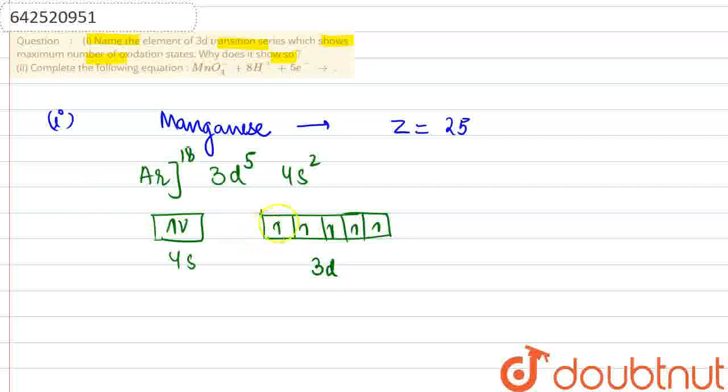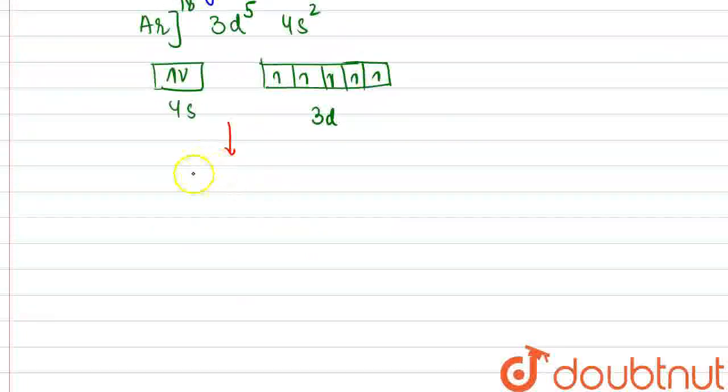So, as we can see here already, that this is having so many unpaired electrons. And how many unpaired electrons are there? 5. 5 unpaired electrons maximum and further, if there is any high energy orbital, its 4S electron can also excite.